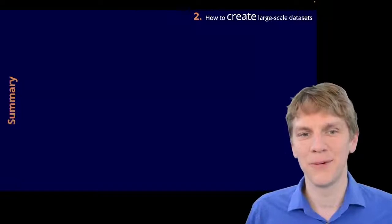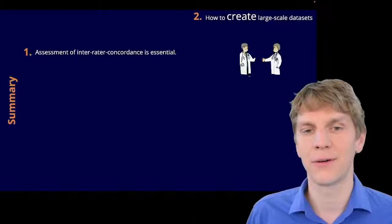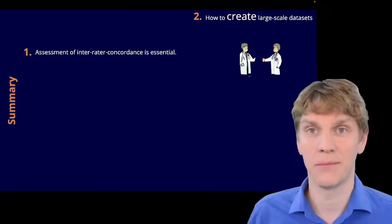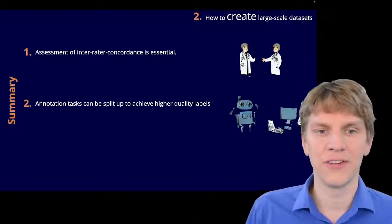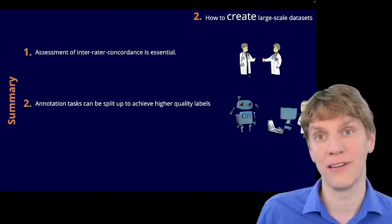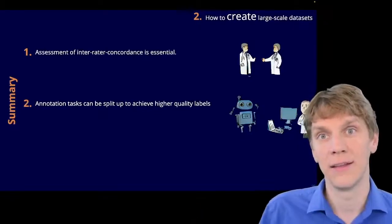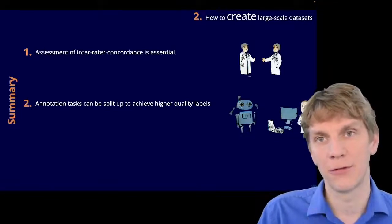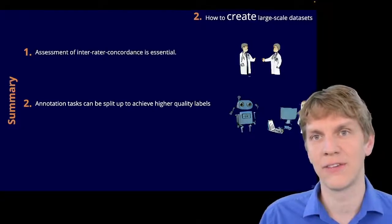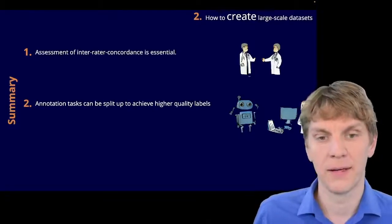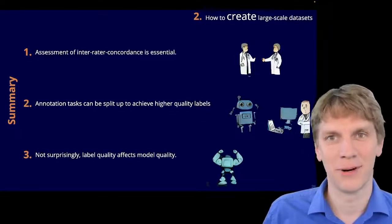So, that leads me to a summary of this part of my talk. So, first of all, the assessment of the inter-rater concordance is really essential. We need to do that actually before running the experiment. The annotation tasks can be split up to achieve higher quality labels, so into things that can be aided by machine learning without inducing bias, and those where we should restrain from doing that or at least do a proper quality check of the annotations in an unbiased way afterwards. And, of course, not surprisingly, the label quality affects the model quality.